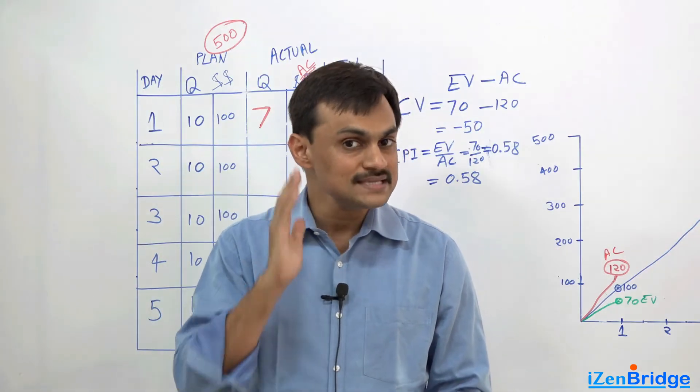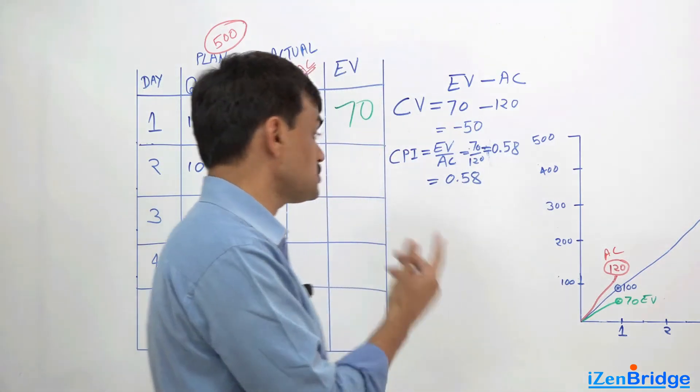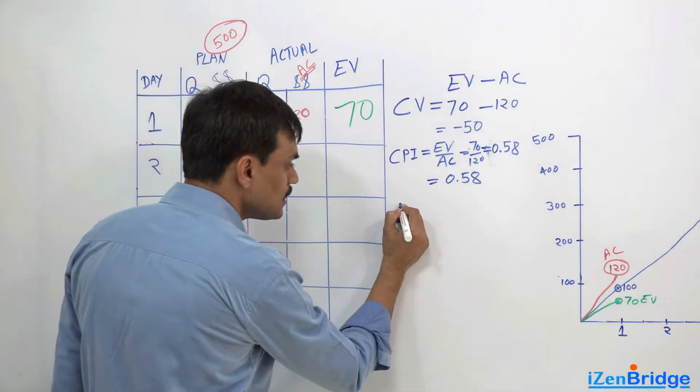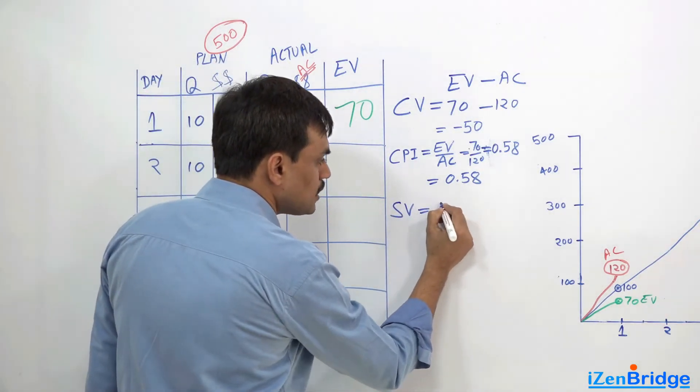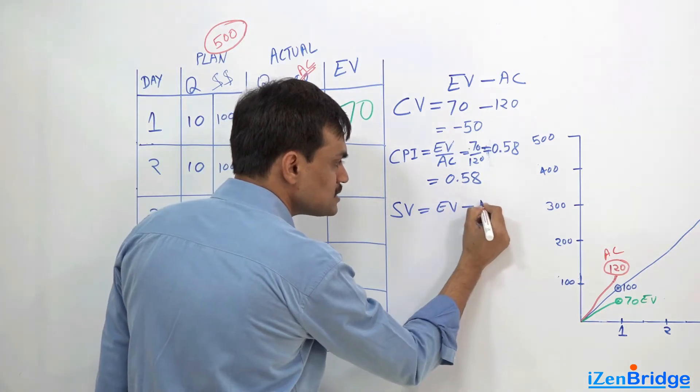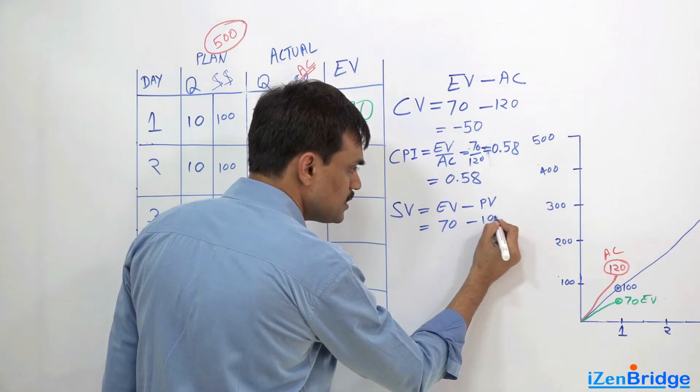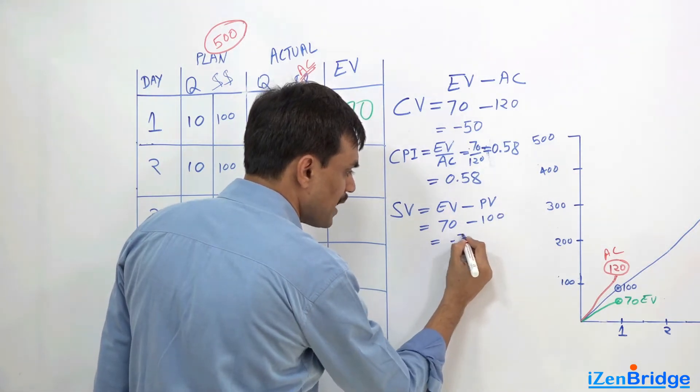So this is how we can make sense by using cost performance index. Now we also have something scheduled variances - we call it earned value minus planned value. In this particular case, 70 minus 100 equals minus 30.